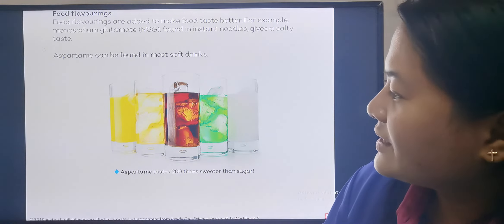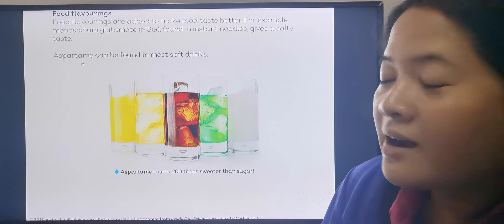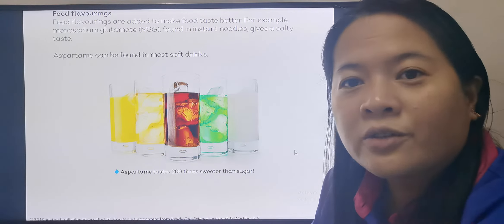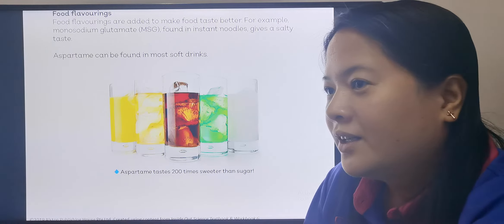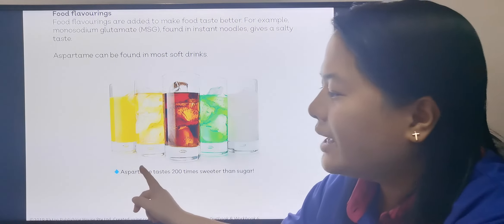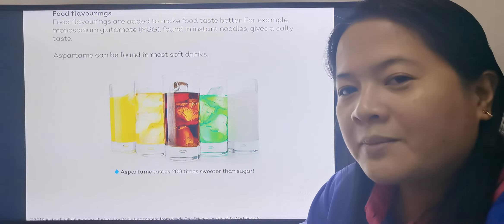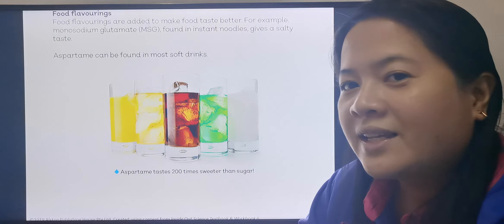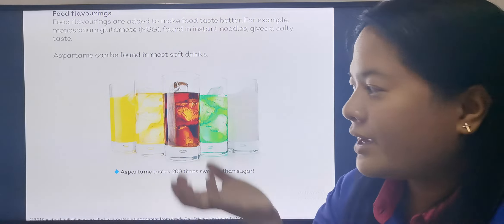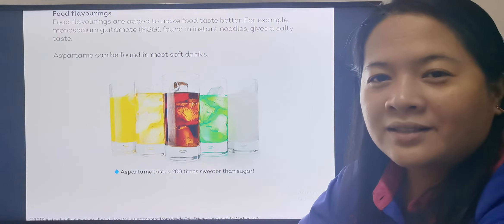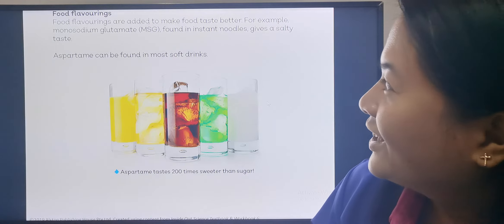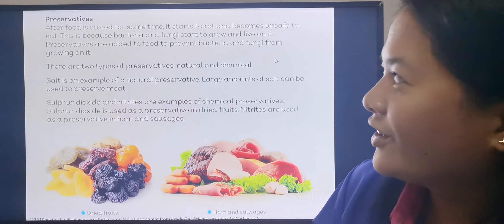Another example of a food flavoring is aspartame. This is a chemical that can be found in most soft drinks — sodas like Pepsi and Coke. Aspartame is a chemical that tastes 200 times sweeter than sugar. Imagine that — 200 times sweeter than sugar! So when you drink sodas, it's so sweet and feels delicious and refreshing. But they are not good for you.